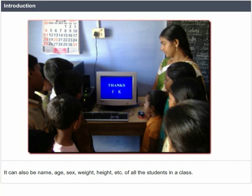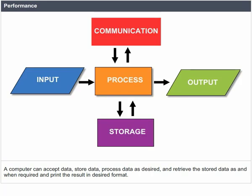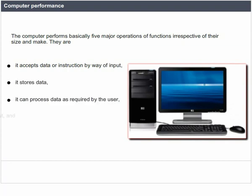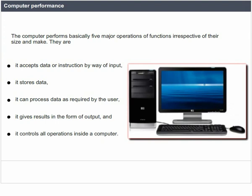Of all the students in a class. A computer can accept data, store data, process data as desired, and retrieve the stored data as and when required, and print the result in desired format. The computer performs basically five major operations irrespective of their size and make: it accepts data or instruction by way of input, stores data, processes data, gives results in the form of output, and controls all operations inside a computer.